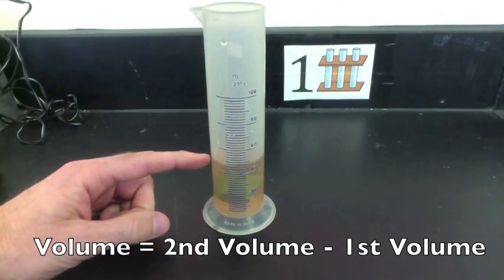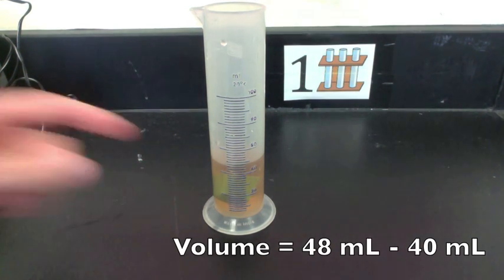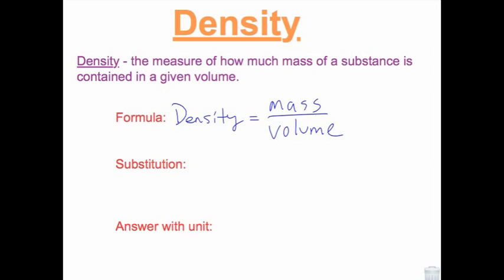To find the volume, subtract the first volume from the second volume. Now use the density formula, mass divided by volume. Don't forget your unit, grams per milliliter.